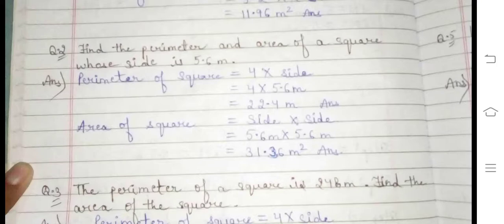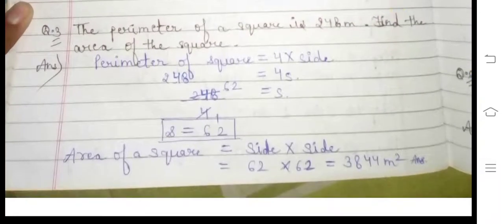Area of square = 31.36 meter square. Now question number 3: The perimeter of a square is 248 meters. Find the area of the square. Perimeter of square = 4 × side.